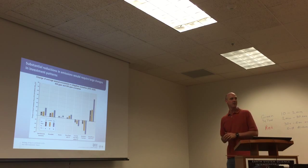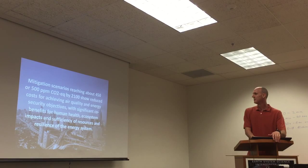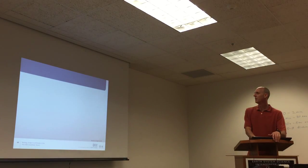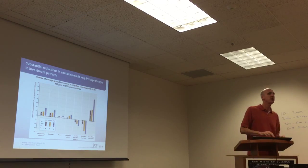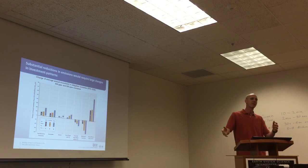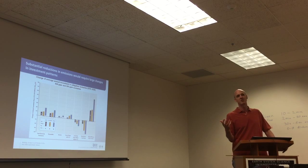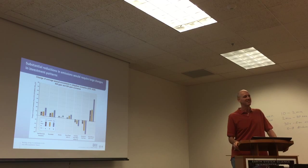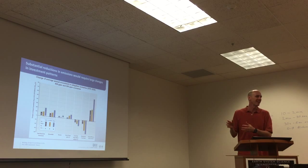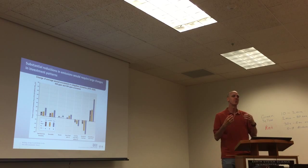The bigger issue beyond total costs is who wins and who loses — that's what actually affects the negotiations. This shows change in annual investment from 2010 to 2029 in 450 and 500 ppm scenarios for OECD countries, non-OECD, and the whole world. Renewables and nuclear see increased investment. Fossil fuel power plants without CCS see reduced investment of about 20 billion average. Extraction of fossil fuels sees reductions in investment — and that's not even counting the reduction in the value of stranded assets underground.